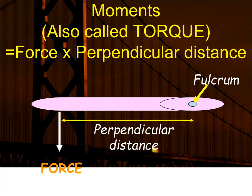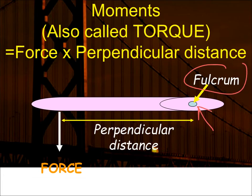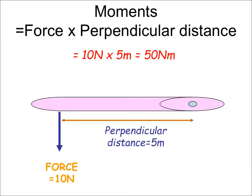Moments — also called torque or the law of the lever — is the force times the perpendicular distance from the fulcrum (the axis or hinge) to where you apply the force, such as a door handle. If the force is 10 newtons and you're five metres away, you get 50 newton-metres of torque. The longer the door handle, the more torque. You can do almost anything in nature if you have a long enough lever — as long as the lever holds and doesn't bend.